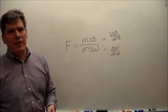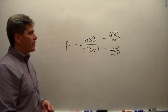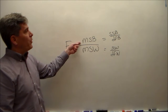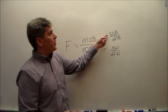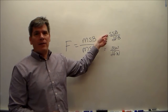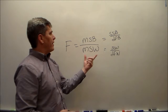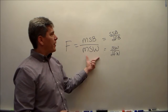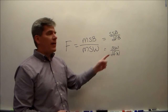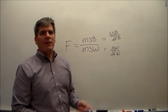Mean squared within could also be called the mean squared error, depending on your source. This mean squared between is the ratio of the sum of squares between to the degrees of freedom between. And this mean squared error is the sum of squared errors divided by the degrees of freedom for error.